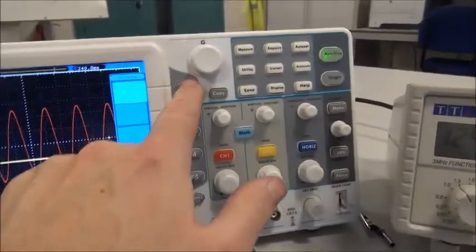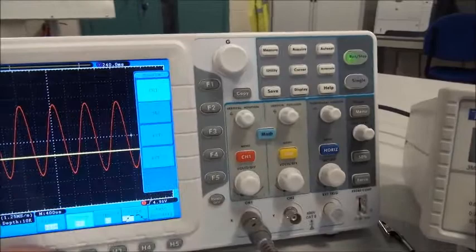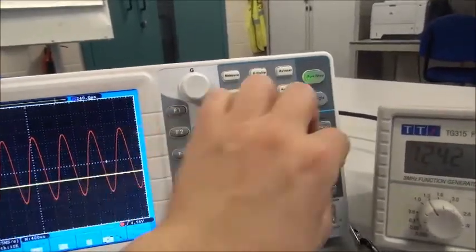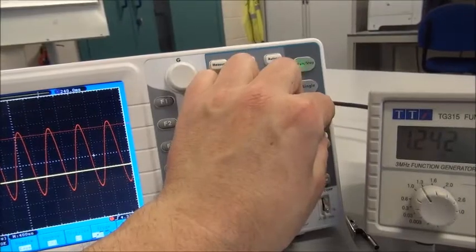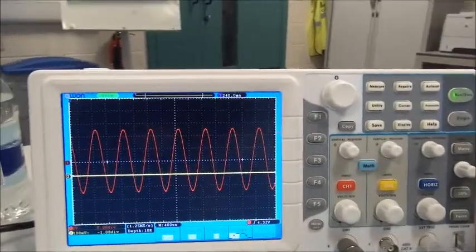So, we need to set the source to channel 1 at the top here. And you can immediately see that when you set that source to channel 1, and when we've got the trigger here, there's the trigger. That's the trigger line there. We get a nice, stable display on our scope.